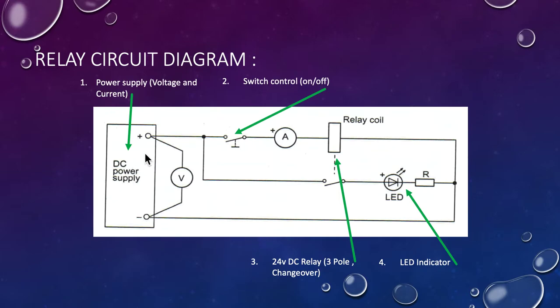Here's our circuit diagram. We have a DC power supply which allows me to vary the voltage. I'll have current limited but certainly have more than sufficient current to operate the relay. We then have a switch that allows me to turn the circuit on and off easily. Then we have the relay coil itself, a 24 volt DC relay, three pole changeover, so it's got three sets of contacts.